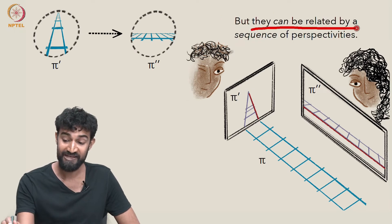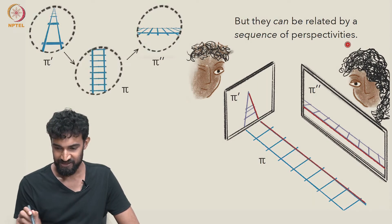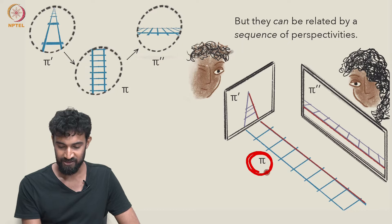But they can be related by a sequence of perspectivities. Namely, we can bring in this intermediary ground plane, π.